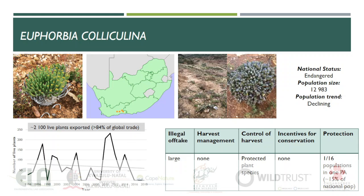Euphorbia kalikilina is endemic to the eastern Little Karoo in the Western Cape, where it is threatened by ongoing habitat loss and degradation, but more severely by herbivory and overgrazing. It is currently assigned a status of endangered with a population numbering just under 13,000 individuals. Some of the populations are experiencing ongoing decline. Around 2,000 live plants have been exported from the country, accounting for more than 84% of the global trade, making South Africa the primary exporter. The single nursery known to be exporting the species grows plants from wild-harvested seed, and it is suspected that wild plants have also been exported to supplement shortfalls in demand for large plants. Illegal offtake is therefore deemed to be large. There is currently no harvest management plan, and just 1 out of 16 populations occurs within a protected area.